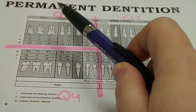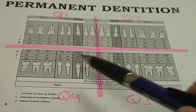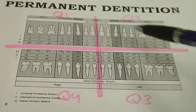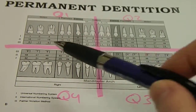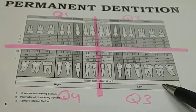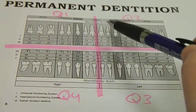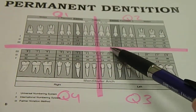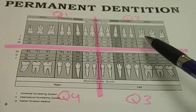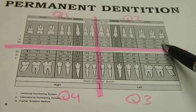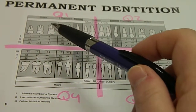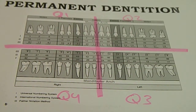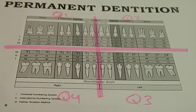That divides it into fourths — quadrants one, two, three, four — and we move in a clockwise position, just like we do for regular numbering. We number one through 16 and 17 through 32, just dividing this up into four equal parts. There are eight teeth in each quadrant.